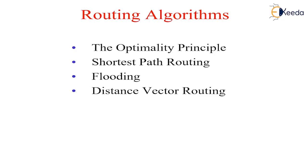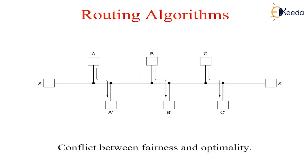Fairness and optimality may sound obvious. Consider one example which shows the conflict between fairness and optimality. Here, there is enough traffic between A and A', B and B', and between C and C', so there is no chance for traffic between X and X'. For that purpose, some compromise between global efficiency and fairness to individual connections is needed. Before we can even attempt to find a trade-off between fairness and optimality, we must decide what it is we seek to optimize. That is, minimum packet delay or maximizing total network throughput.